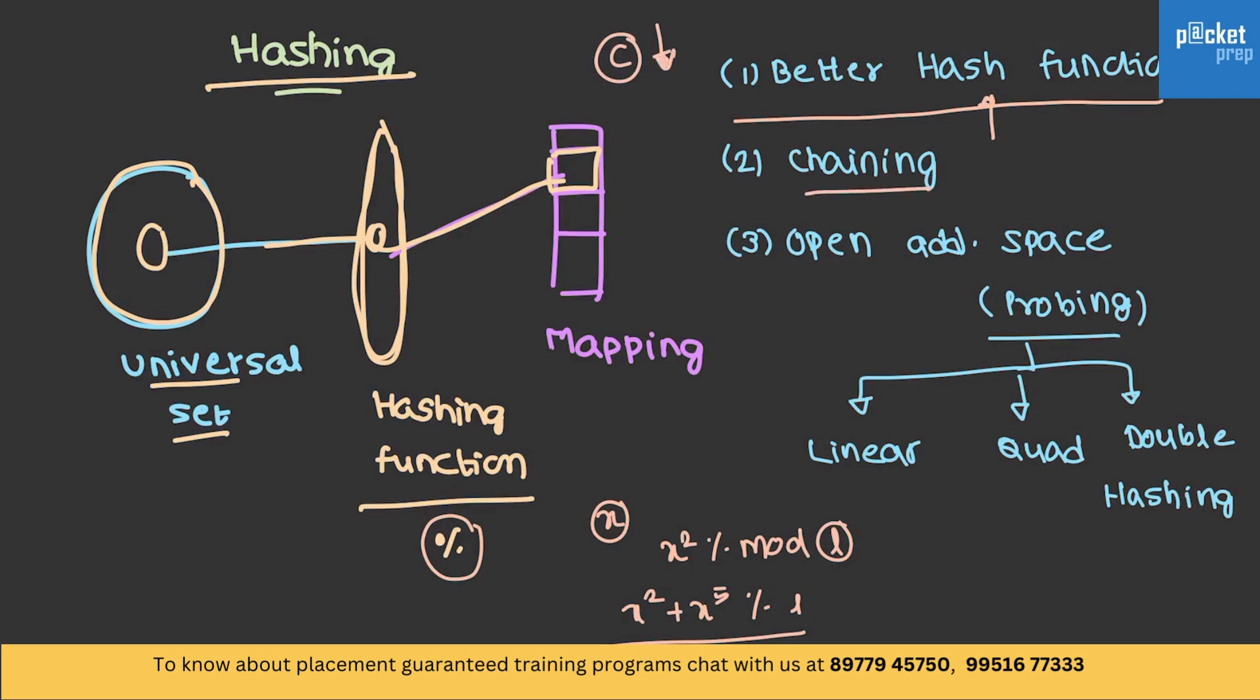Or, you can perform chaining. If this is the space where we are having collision between 2 and 5, we can actually store it in terms of linked list. 2 will be stored. It will be storing an address to 5 and so on. But, this in turn actually reduces our probability to perform the search in time complexity of order of 1. Order of 1 will be failed when we try to develop it with chaining.